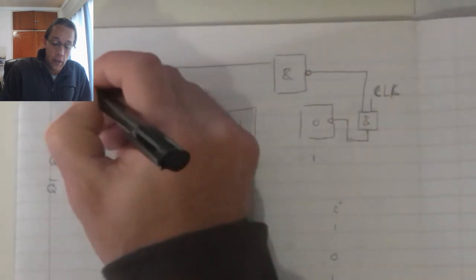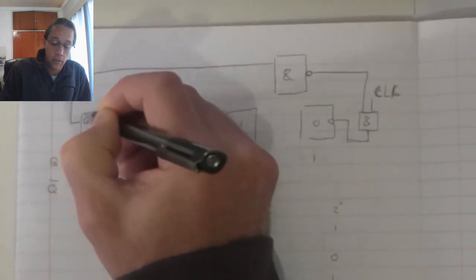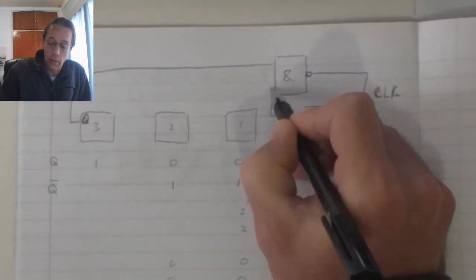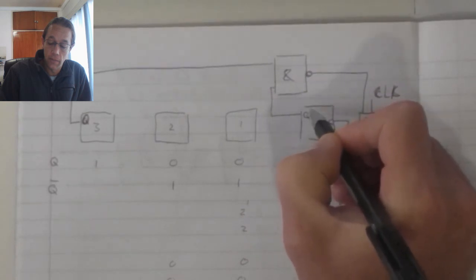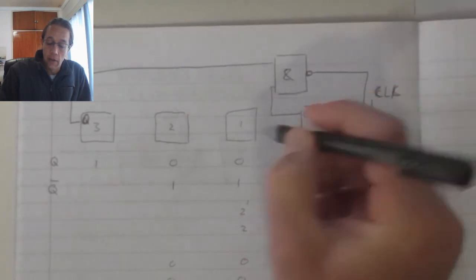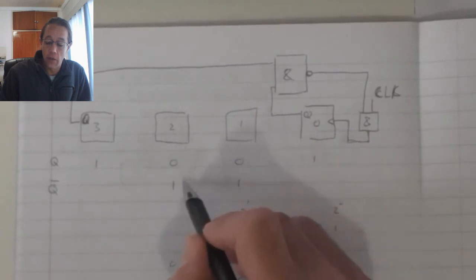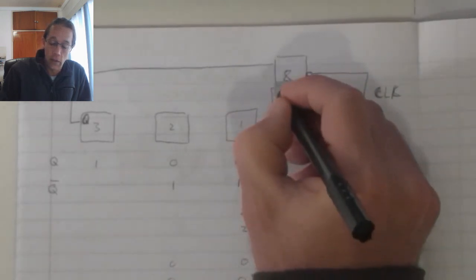This one is going to connect to my Q output. This one is also going to connect to my Q output. But these two, as they are 0's, they need to connect to the NOT Q, which in this case is going to be 1's.